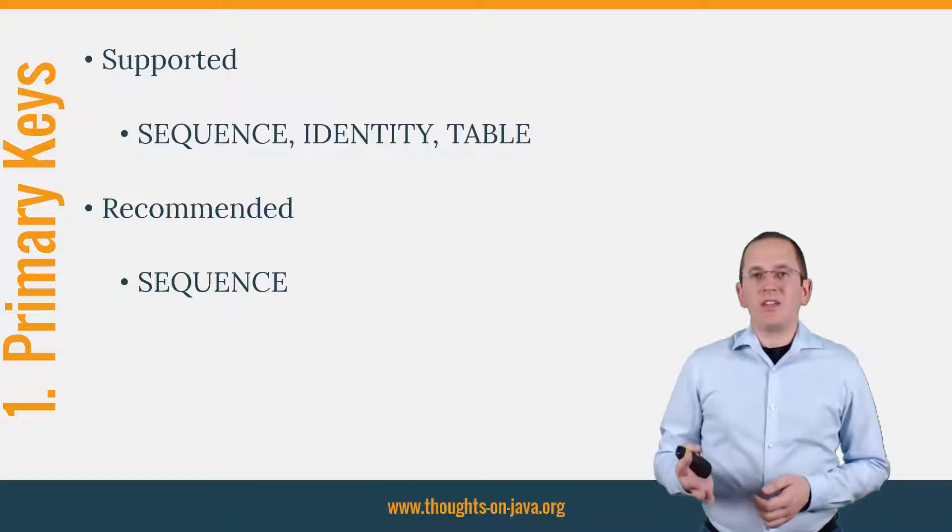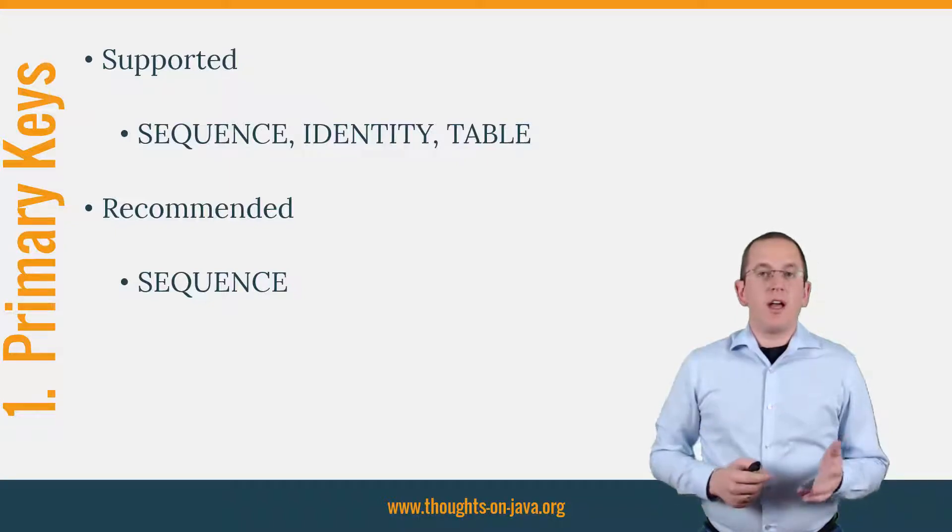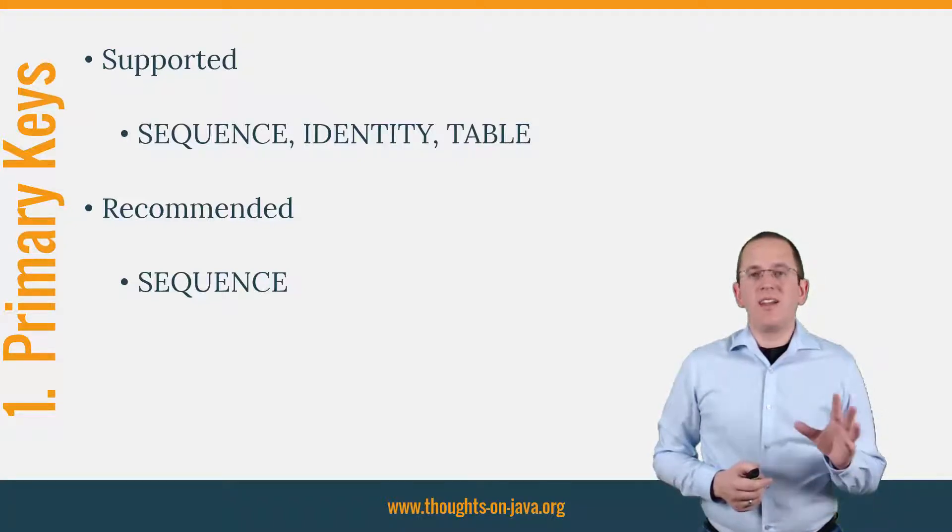The best generation strategy you can use with a PostgreSQL database is the sequence strategy. It uses a simple database sequence and is highly optimized by PostgreSQL. And Hibernate uses an optimized algorithm by default to avoid unnecessary statements. Let's take a quick look at an example that uses a custom database sequence.